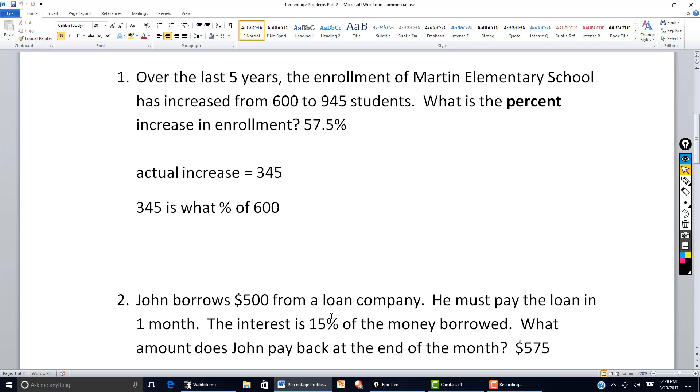Obviously he has to pay back the $500 plus whatever interest. This is kind of high, but it's just a problem to illustrate some examples here. The 15% is based on 500. Those two go together. 500 is the base.